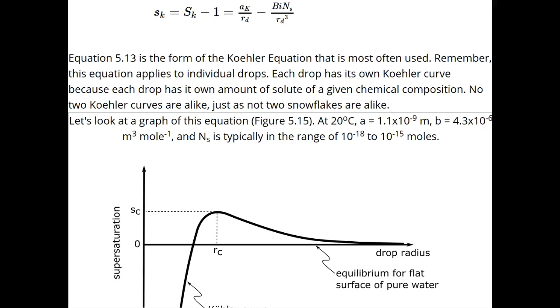This is called the Kelvin effect, or the curvature effect. And the second process lowers the equilibrium vapor pressure. This is called Raoult's law, or the solute effect.